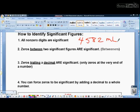How many significant figures are there in that number? There are four. The four, five, eight, and two. All of them are non-zero digits, so that makes it easy.